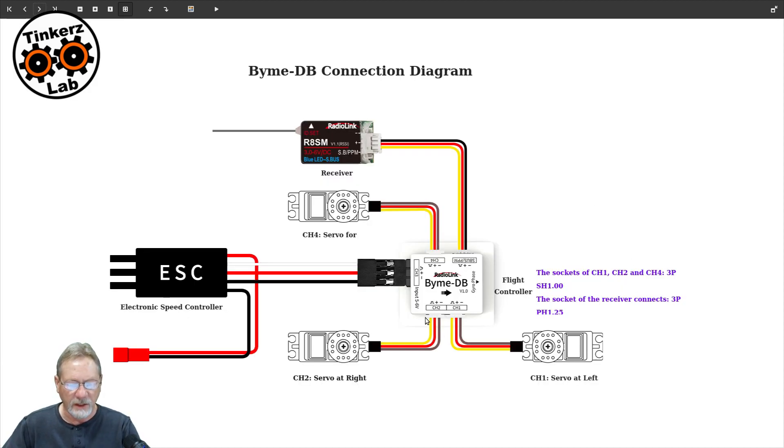All right, so here it shows where everything is connected up. Your channel 1, your channel 2 for your elevon, your two servos for your elevon mixing, your ESC. And here it tells you channel 1, channel 2, and channel 4, which are the aileron, elevator, and rudder channels.